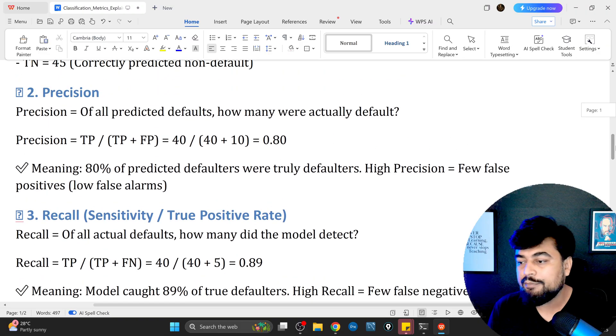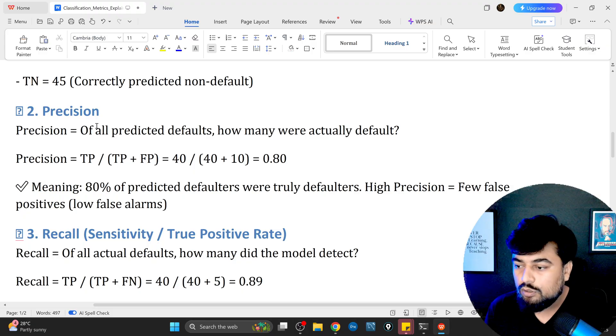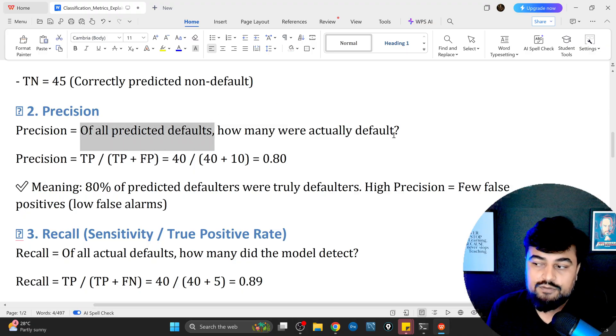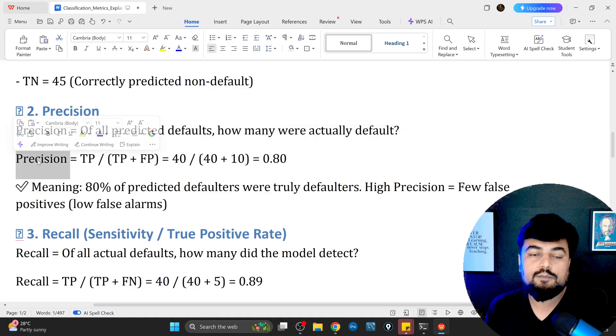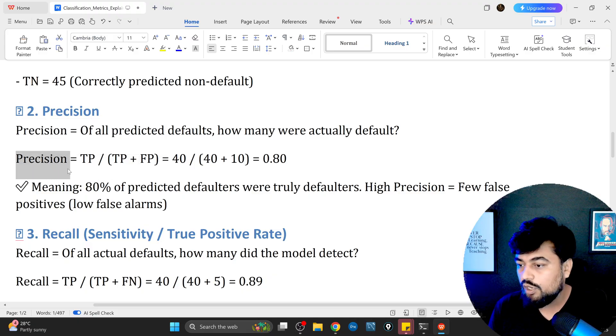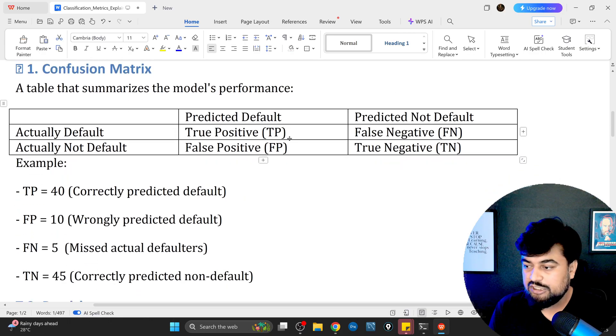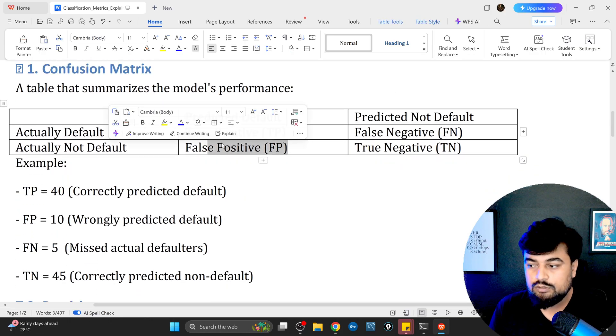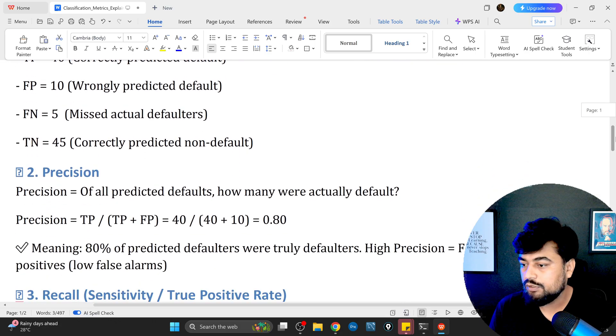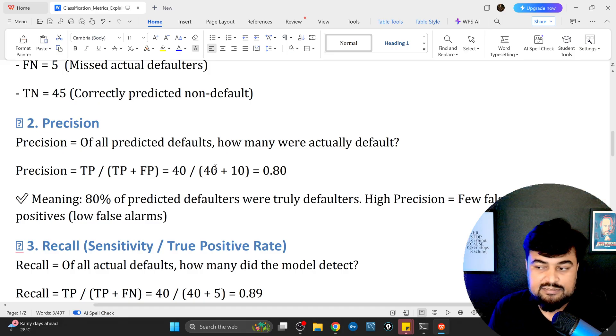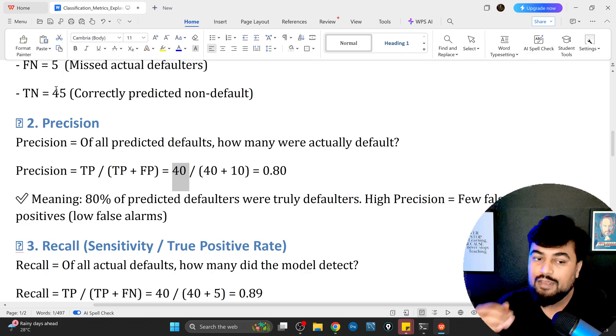Let's talk about the second metric: precision. Out of all predicted defaults, how many were actually defaults? The formula is TP divided by TP plus FP. We calculated 40 divided by 40 plus 10, that is 0.8.